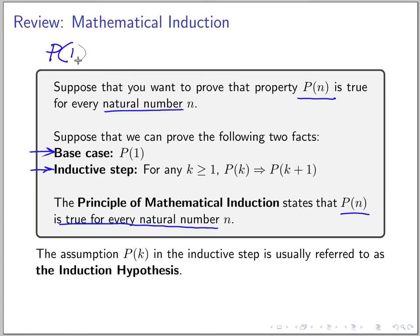P(1) is true because of the base case. Then the inductive step, because this is true for every k which is at least one, if you plug in one here then this would say P(1) implies P(2). Since we know that P(1) is true from the base case, we can conclude that this would imply P(2). We can keep plugging in, so we get that P(3) is also true, and so on.